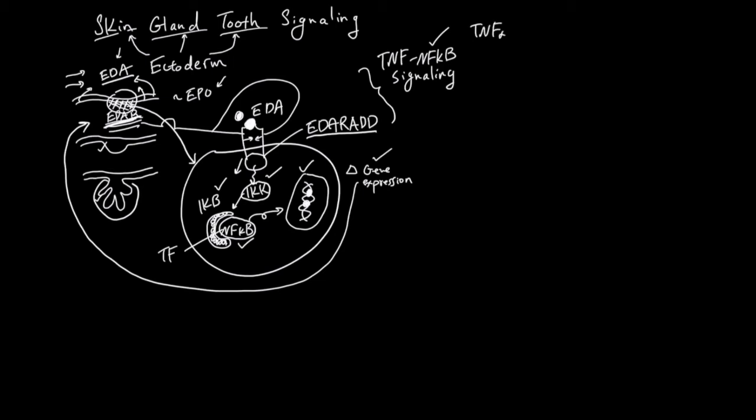TNF-alpha, which is a cytokine released by many immune cells, can bind to cells with a TNF receptor. The TNF receptor also, like EDA receptor, doesn't have a good cytoplasmic signaling domain. So an adapter called TRADD comes and helps the receptor to send the signal intracellularly, eventually activating IKK.